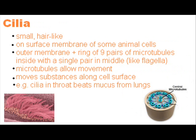Cilia are small, hair-like structures found on the surface membrane of some animal cells. In cross-section, they have an outer membrane and a ring of nine pairs of protein microtubules inside, with a single pair of microtubules in the middle. The microtubules allow the cilia to move, and this movement is used by the cell to move substances along the cell surface.